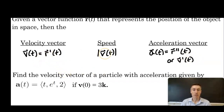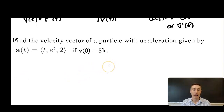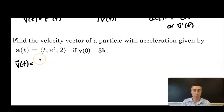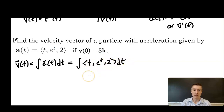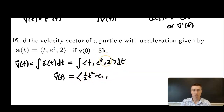Our first example: find the velocity vector of a particle with acceleration given by a of t being ⟨t, e^t, 2⟩ if v of 0 equals 3k. Here we're going to need to integrate to go from acceleration back to velocity. So the velocity vector function will be found by integrating our acceleration: the integral of ⟨t, e^t, 2⟩ dt. So velocity equals ⟨1/2 t squared plus c1, e^t plus c2, 2t plus c3⟩.